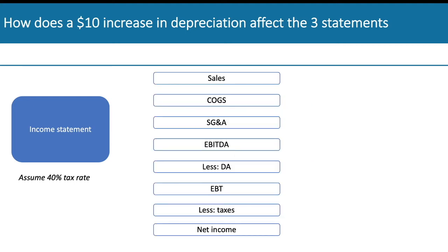Starting with the income statement: at the top, you've got sales, COGS, SG&A, and EBITDA — all of this is going to be unaffected by the depreciation. However, your depreciation line is going to go up, and this is going to reduce your earnings before taxes by 10, which is the same amount as the depreciation increase.